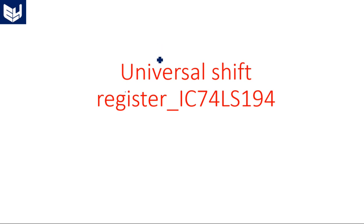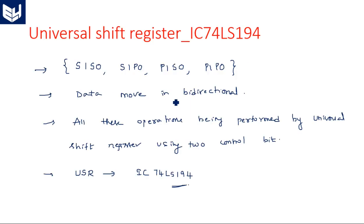Hi everyone, in this video I'm going to explain how to write a VHDL code for a universal shift register. In the previous video I started the discussion of this universal shift register with the 74LS194 IC diagram. The different operations performed by IC 74LS194 are specified here — four different operations in bi-directional mode.